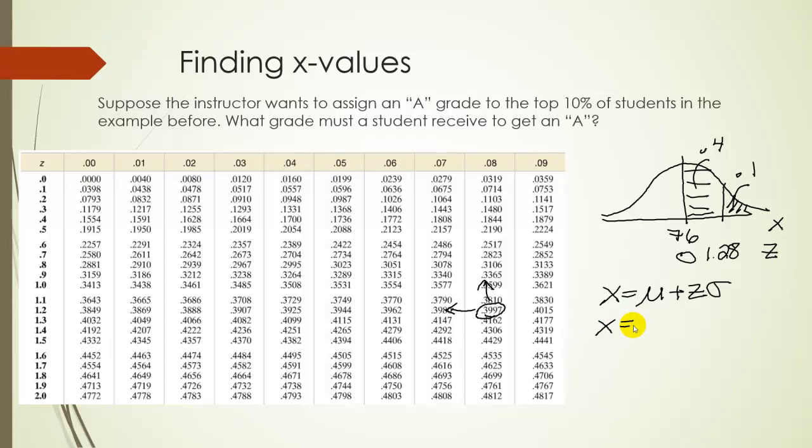So x is equal to, well, μ we said was 76, our z-score is 1.28, and our standard deviation was 8. Let's see, where are we? Okay, so just take out a calculator and do this math. So we get 76 plus 1.28 times 8, and we get 86.24.